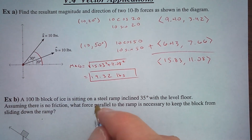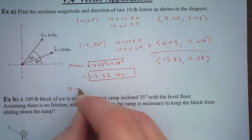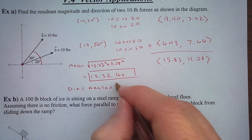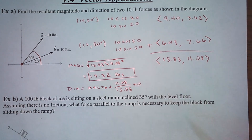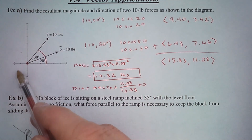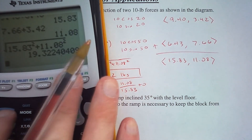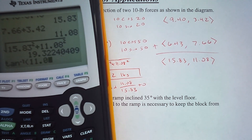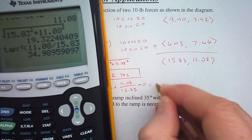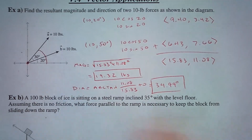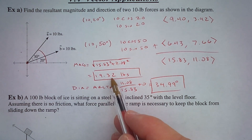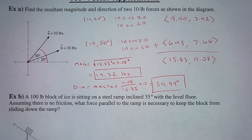And in what direction? For the direction, we do arctan of y over x. Because we are in the first quadrant, we add zero. Over here we would add 180, and 360 for the fourth quadrant. So arctangent of y over x gives us 34.99 degrees. That is the direction. So with these two 10-pound forces pulling in these two directions, the result is 19.32 pounds of force at a direction of 34.99 degrees.